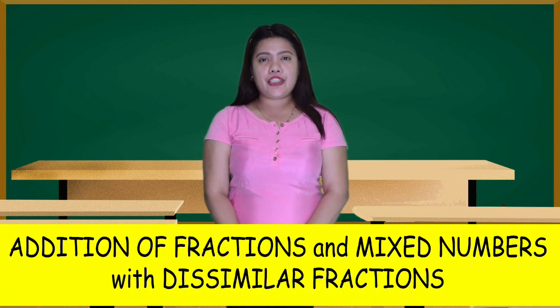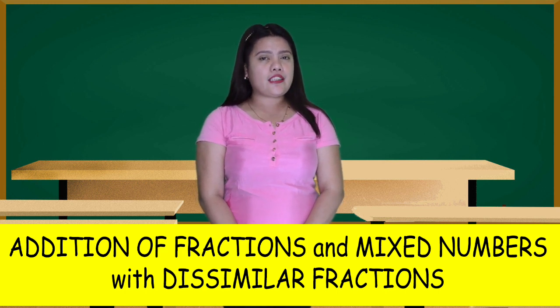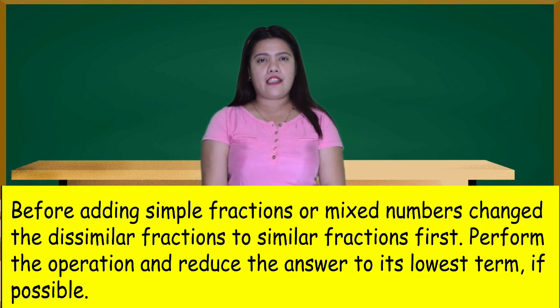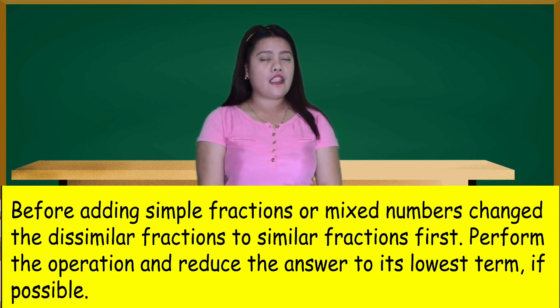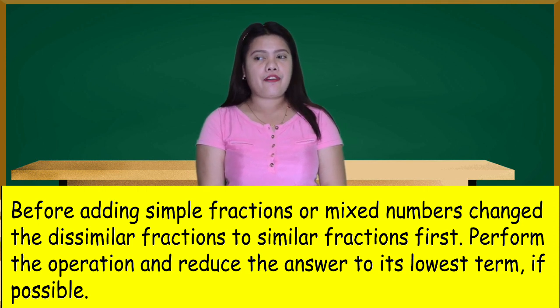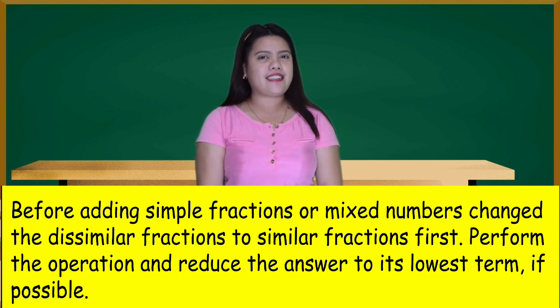Now, let's proceed to the addition of fractions and mixed numbers with unlike denominators, or dissimilar fractions. Before adding simple fractions or mixed numbers, change the dissimilar fractions to similar fractions first. Perform the operation and reduce the answer to its lowest term if possible.